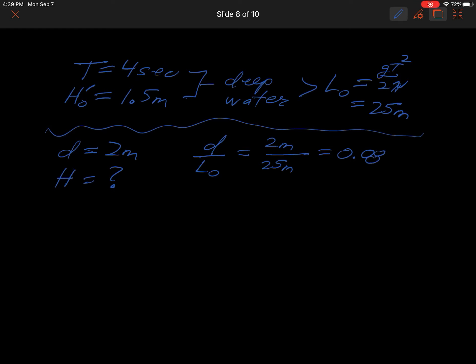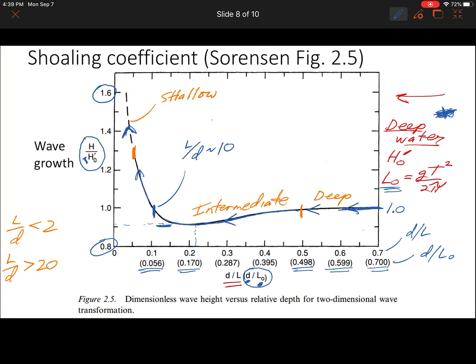Now we're going to go back to that curve. So d over L0 is 0.08. A little bit tough to read there—0.08. And the axes we want to be looking at are the ones where the numbers are the ones in parentheses. So I don't know, somewhere over here—0.08. This is 0.06 here, this is 0.17, so maybe we're a bit closer to 0.06.